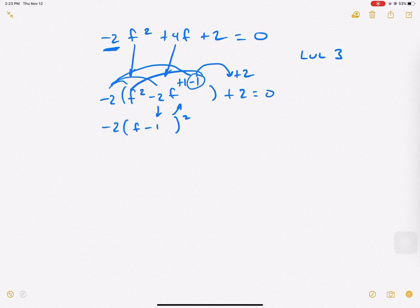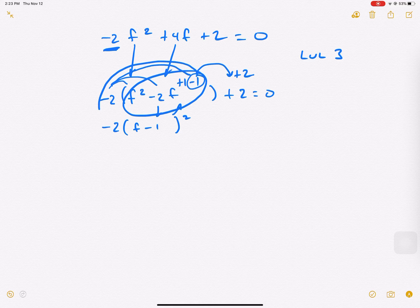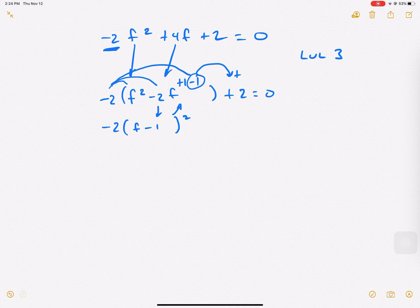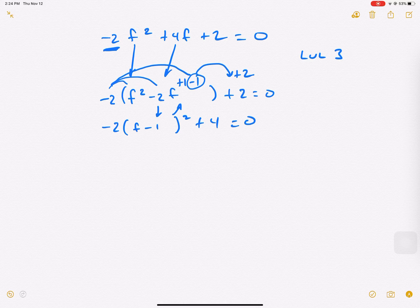Inside the parentheses is negative 1, but we multiply it by negative 2 to kick it out. So that's a positive 2, and we're left with a positive 4 on the outside, equals 0. Now we're here. We solve it like we normally do. We get rid of a couple of things.